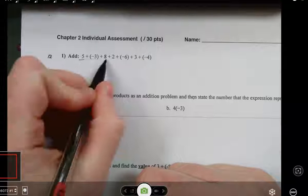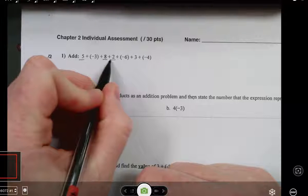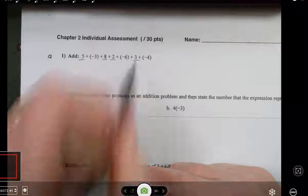So I've got 5, 8, and 2, and 3. Those are all positives.